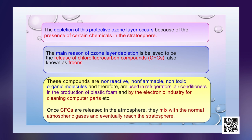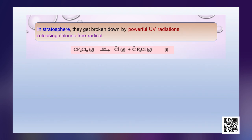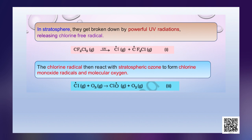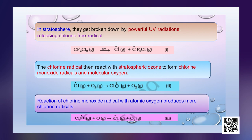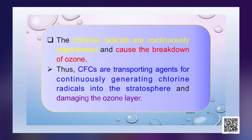Once CFCs are released into the atmosphere, they mix with normal atmospheric gases and eventually reach the stratosphere. There, they get broken down by powerful UV radiations, releasing chlorine free radicals. These chlorine radicals react with stratospheric ozone to form chlorine monoxide radicals and molecular oxygen. The reaction of chlorine monoxide radicals with atomic oxygen produces more chlorine radicals. Thus, chlorine radicals are continuously regenerated, causing breakdown of ozone. CFCs are therefore the transporting agents for continuously generating chlorine radicals in the stratosphere, thereby damaging the ozone layer.